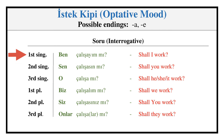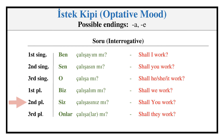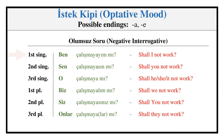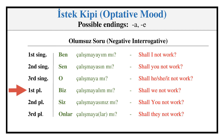Optative Mood — Interrogative: ÇALIŞAYIM MI, ÇALIŞASIN MI, ÇALIŞA MI, ÇALIŞALIM MI, ÇALIŞASINIZ MI, ÇALIŞALAR MI? Negative Interrogative: ÇALIŞMAYAYIM MI, ÇALIŞMAYASIN MI, ÇALIŞMAYA MI, ÇALIŞMAYALIM MI, ÇALIŞMAYASINIZ MI, ÇALIŞMAYALAR MI?